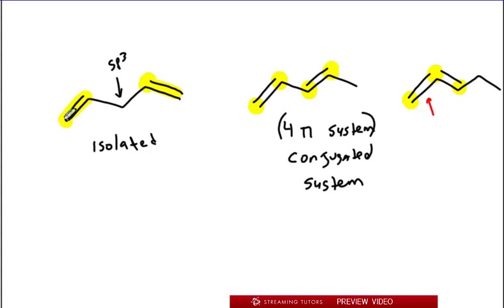Notice how this one has a single bond between them. Well, when two double bonds are not separated by a single bond, we call this cumulated. It's like it's accumulating. It's a cumulated system.